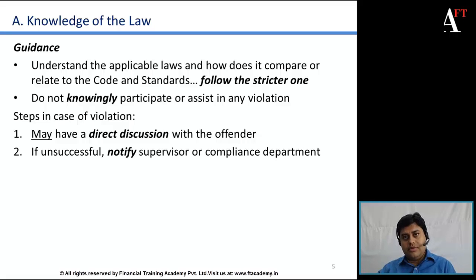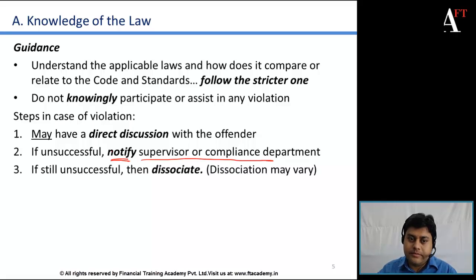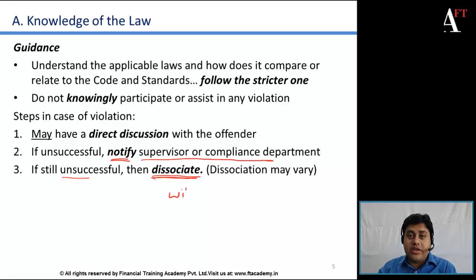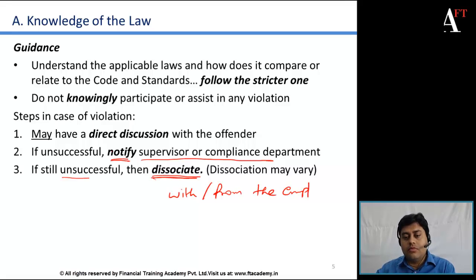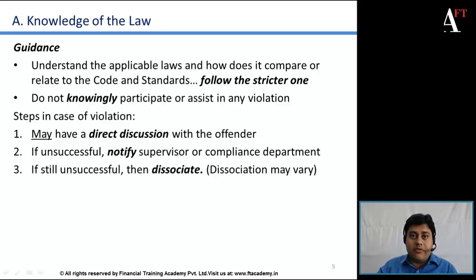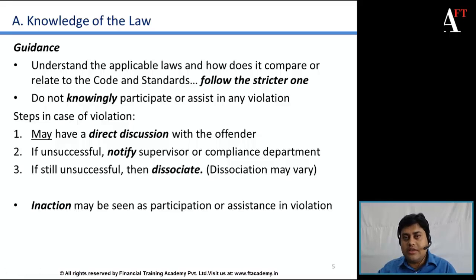If the wrongdoer still continues with that activity, the next step for you is to notify your supervisor or the compliance department of such a violation. If you are still unsuccessful in preventing the act, you need to disassociate from that activity — and in an extreme situation, it can also mean that you need to disassociate from the employment itself. It is something very sensitive, but to follow the code and ethics, you may need to do that.